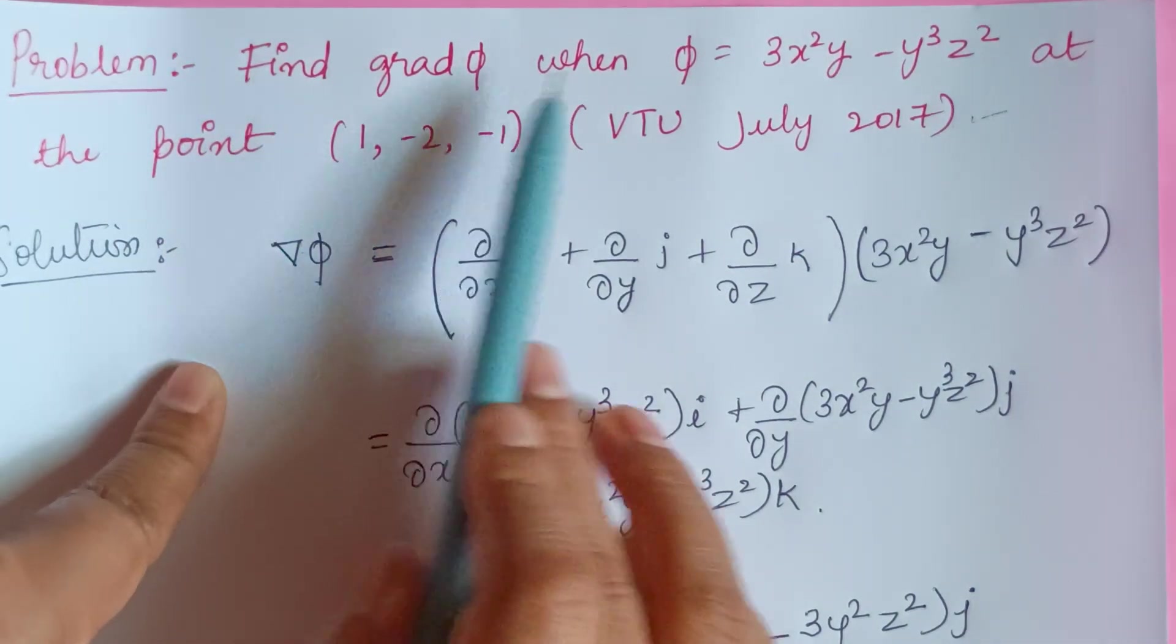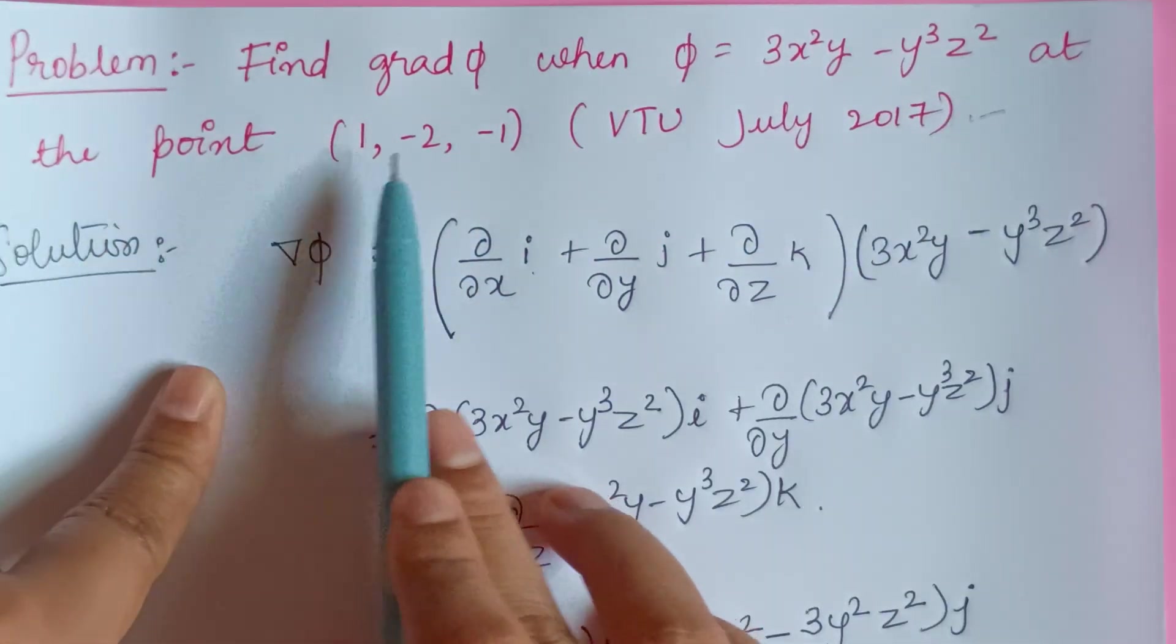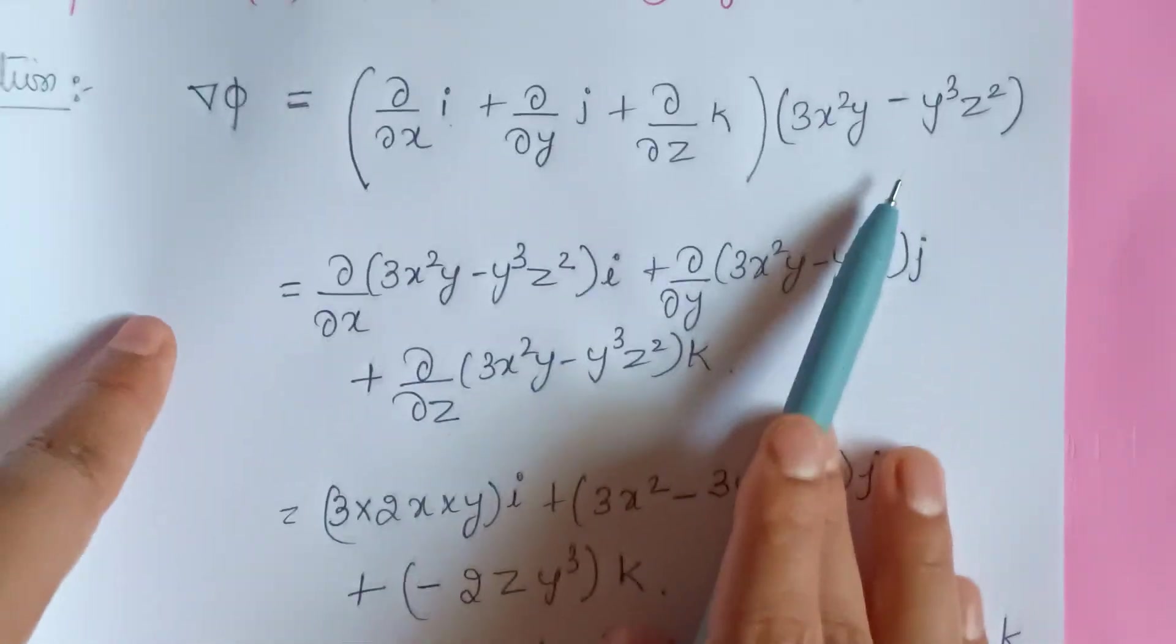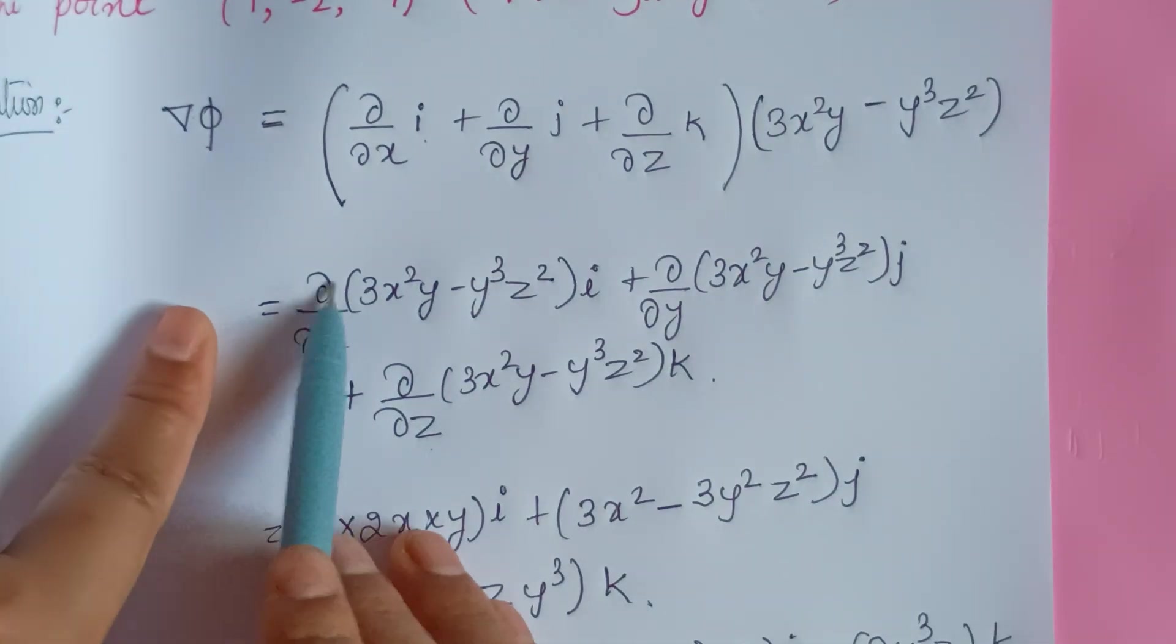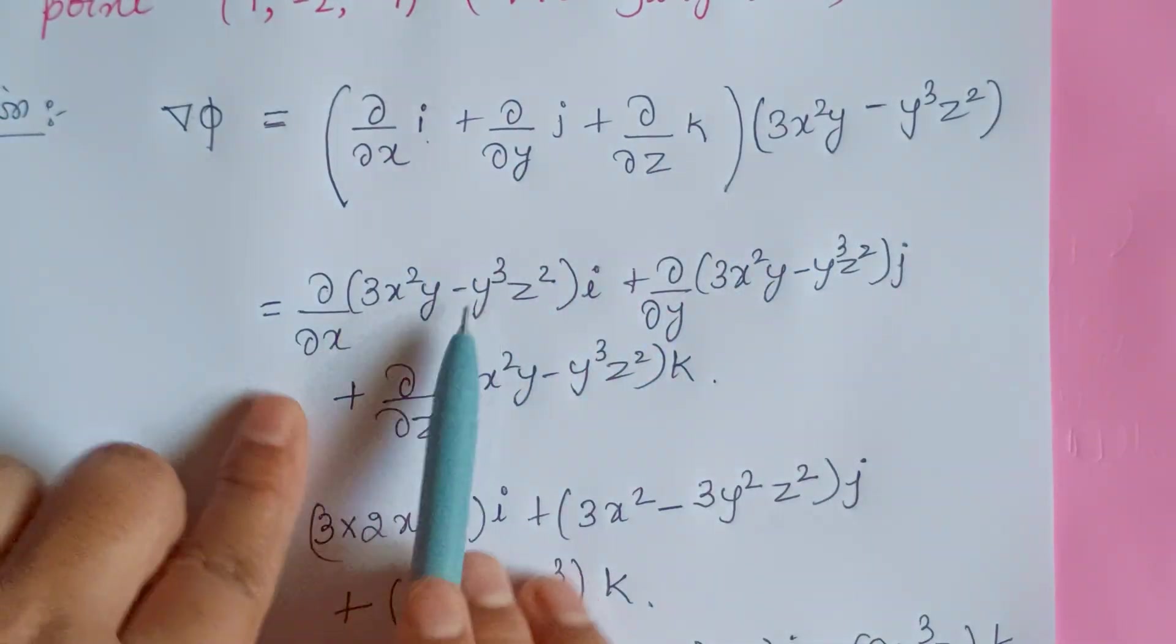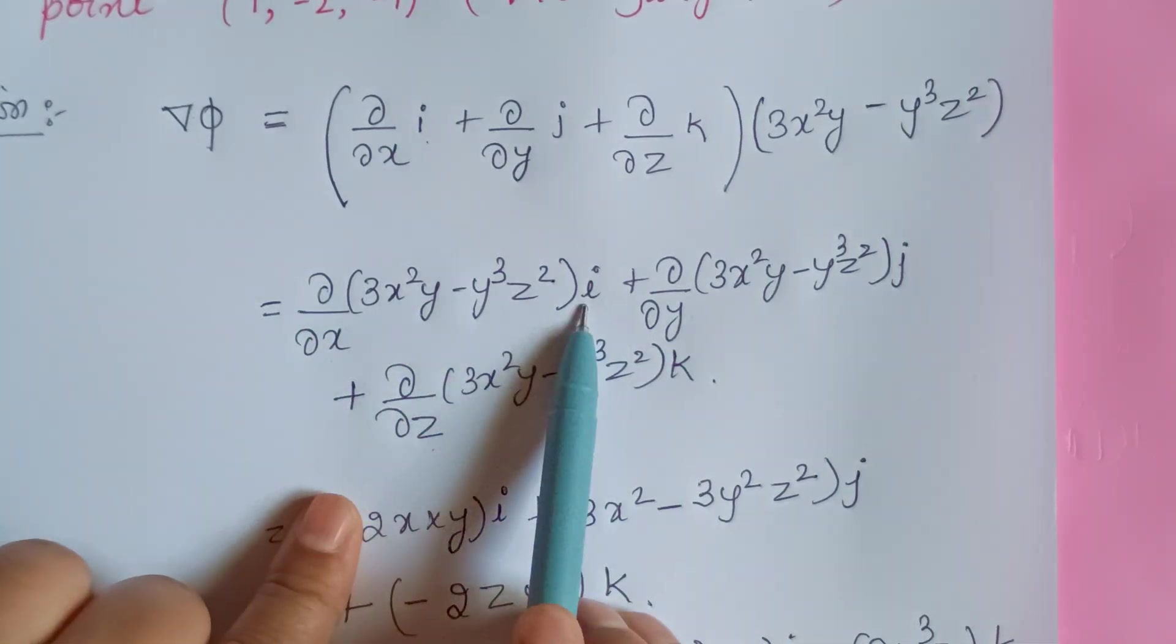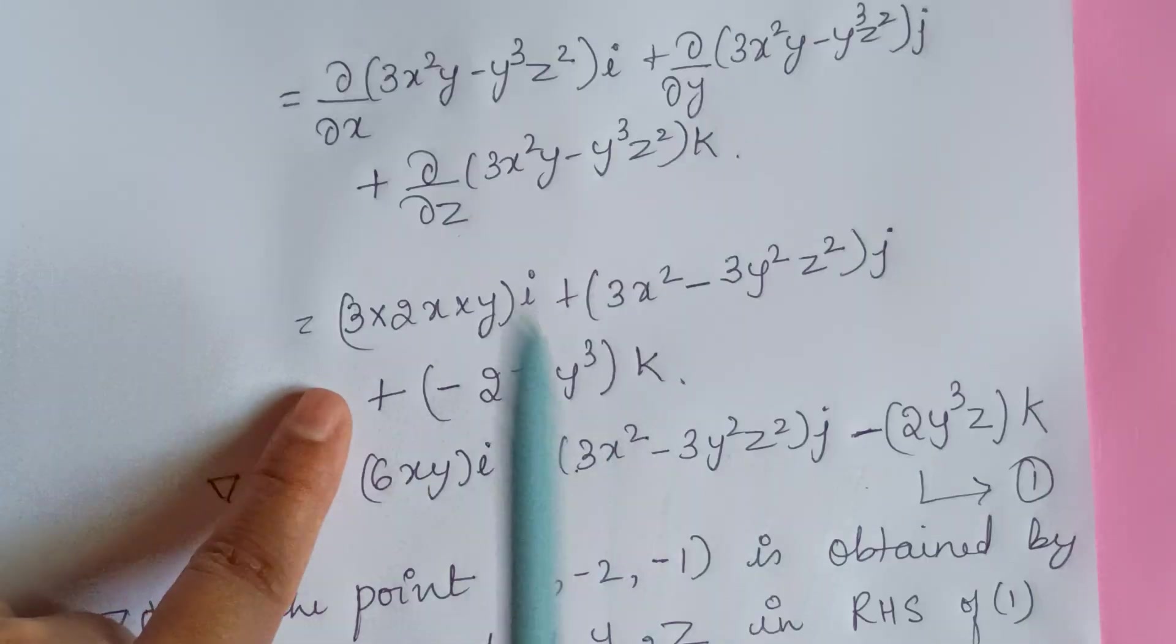Find grad phi when phi equals 3x²y minus y³z² at the point (1, -2, -1). So here's the formula. And we just have to multiply one by one with each of these components and then differentiate partially with respect to x, y, and z. And hence i, j, k are the unit vectors multiplied to it.